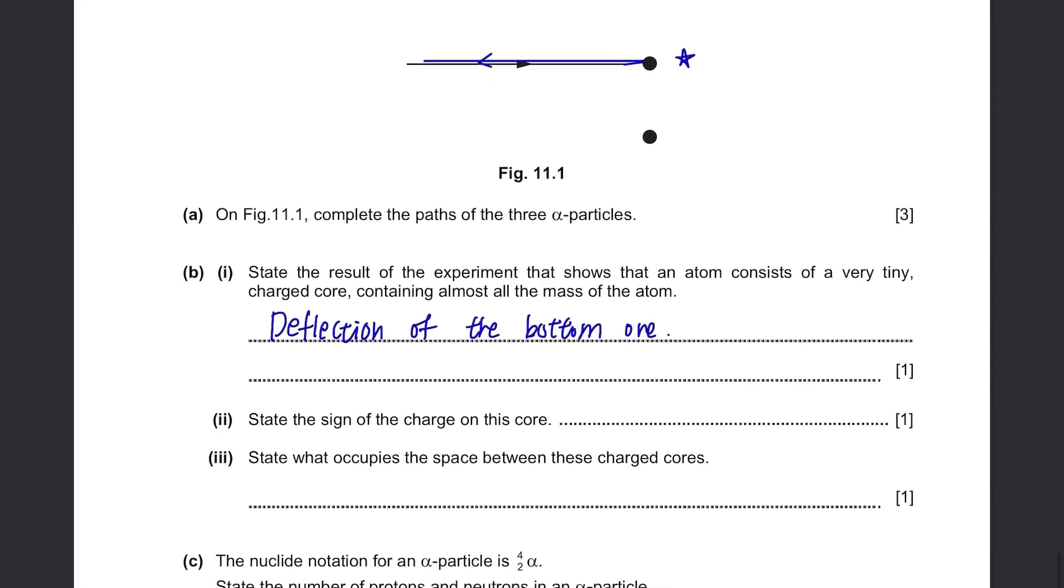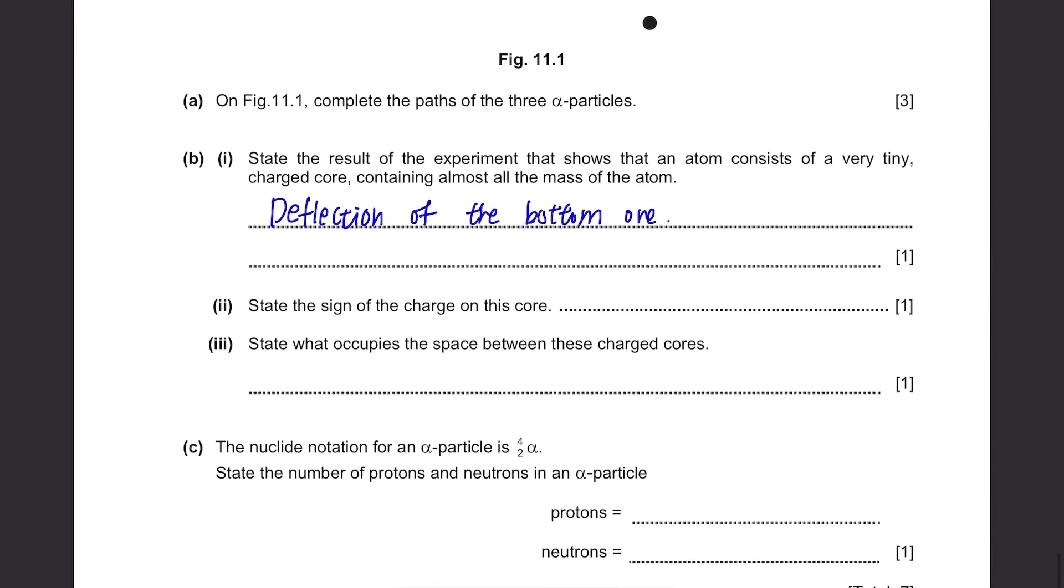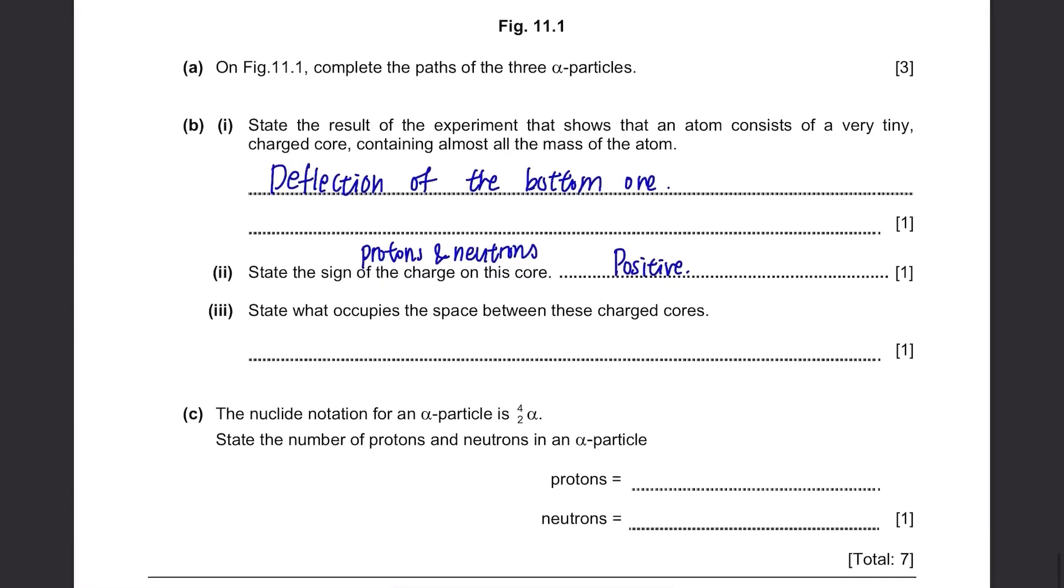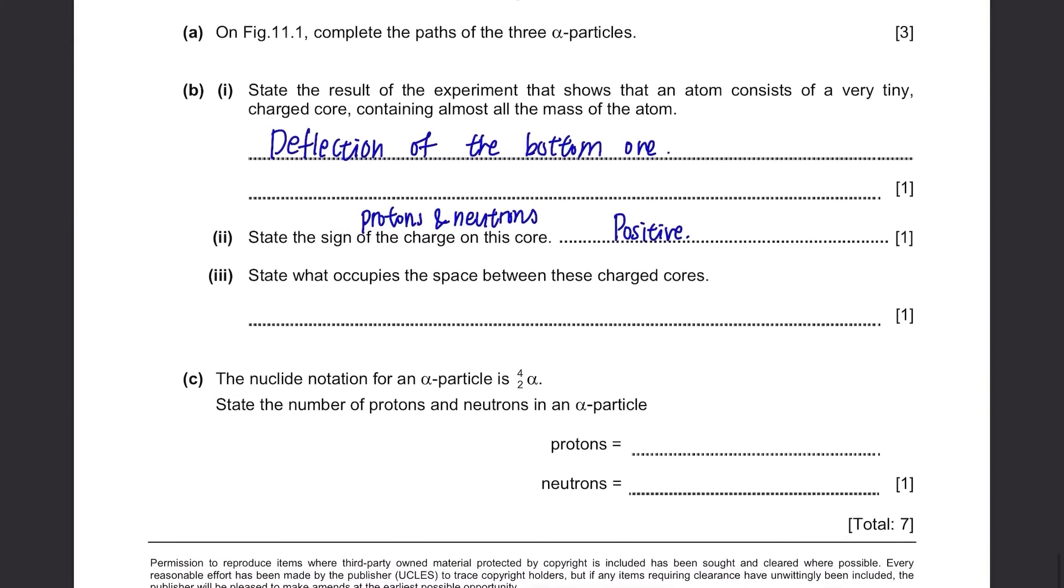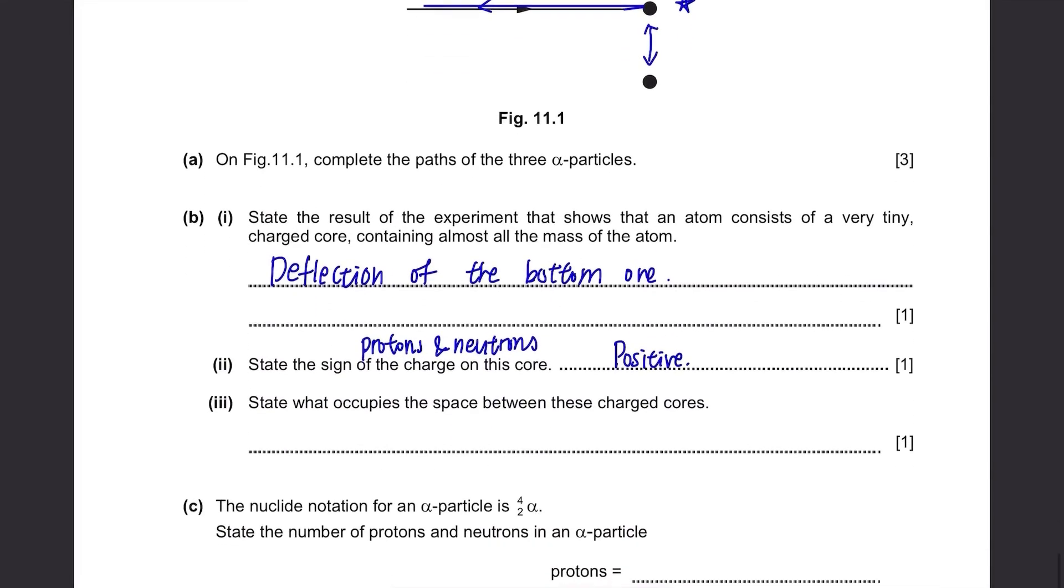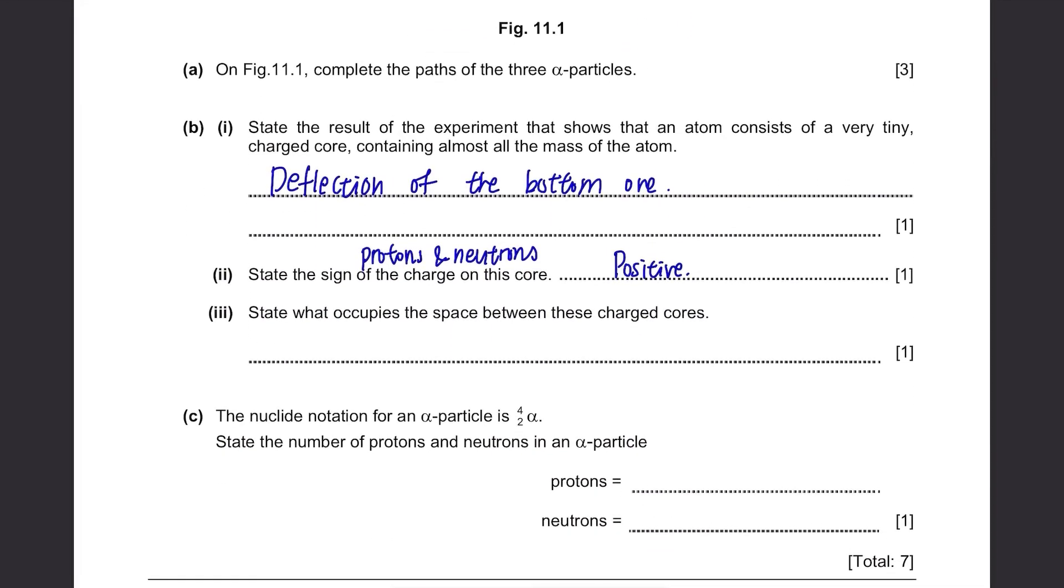Next, state the sign of the charge on this core. What are the components in the nucleus of an atom? They are protons and neutrons, so the overall charge will be positive. Next, state what occupies the space between these charged cores. There's pretty much nothing except few electrons, so you can write nothing or vacuum or just space atoms or electrons.